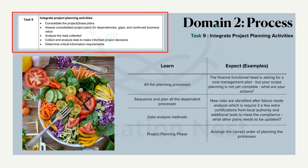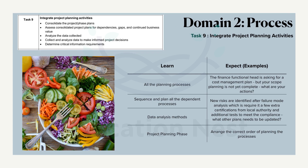In Task 9, PMI expects us to consolidate the project or phase plans — both at the project stage and the phase stage. We have to assess consolidated project plans for dependencies. After integrating all these plans, we must analyze the collected data to make informed decisions, and determine the critical information requirements. You should read all the planning processes from the PMBOK Guide Sixth Edition to cover these areas.